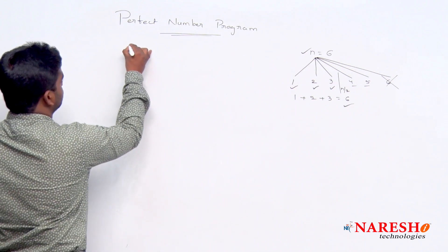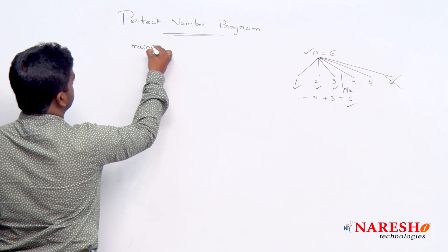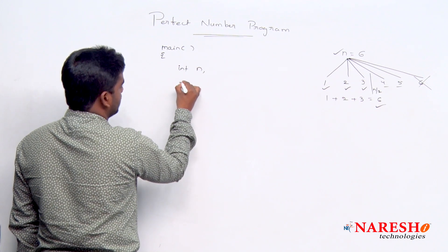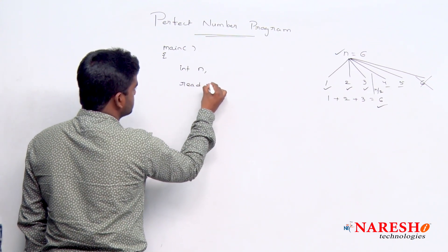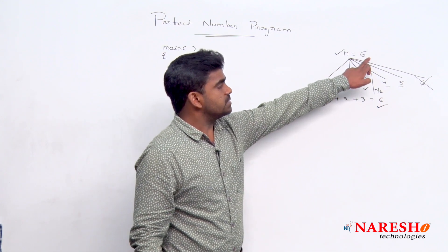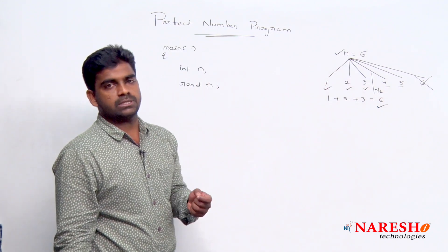Here the program starts with the main. We are just taking one variable to read that n. Directly I am writing here, not printf and scanf. Just we are reading n. n value is 6. Consider n value 6, it may vary.